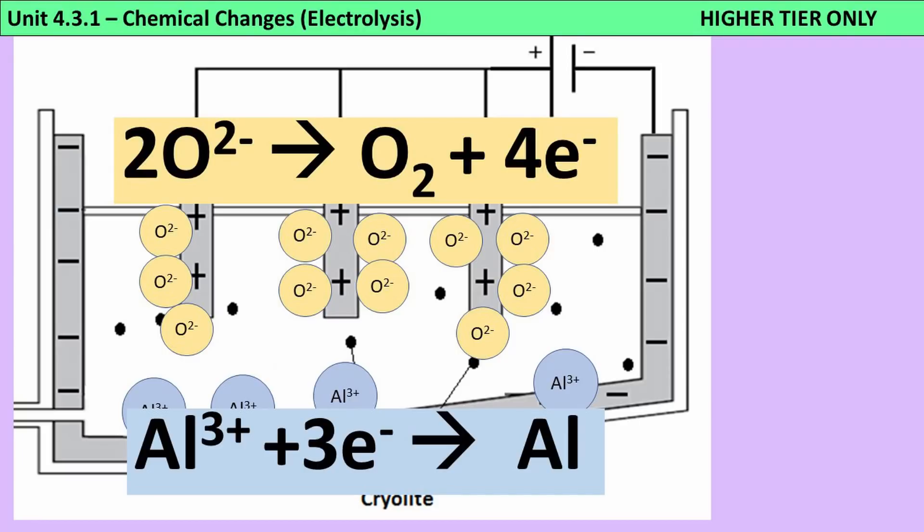And then like we said before, the negative ions are always the more complicated ones. Every oxide ion needs to lose two electrons, but oxygen doesn't go around as single atoms, it goes around as these divalent molecules. So instead, we're going to have two oxide ions, each losing two electrons, that's four in total, and so you end up with an oxygen molecule and four electrons.